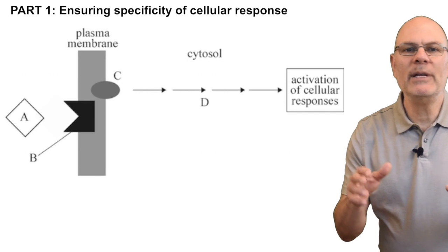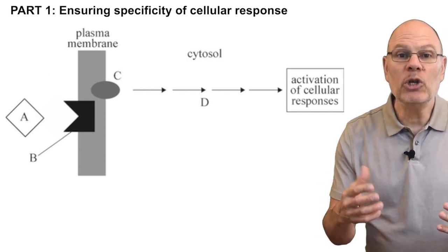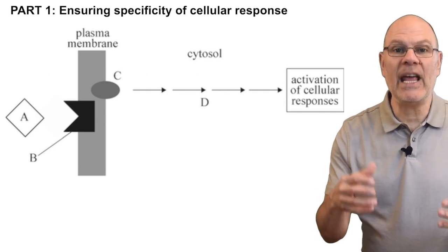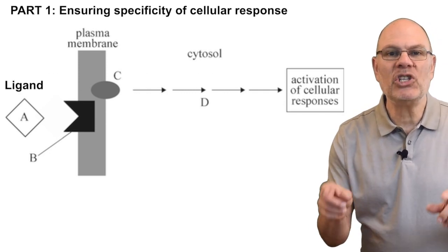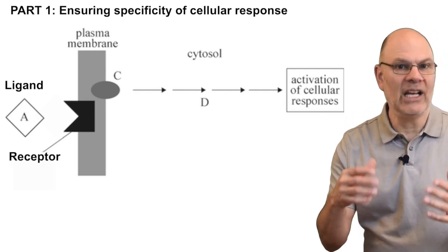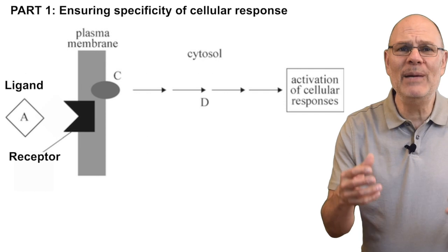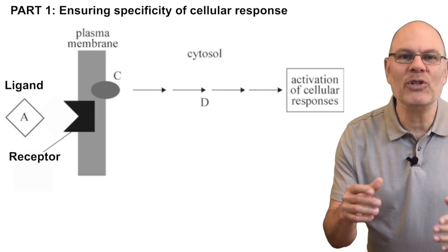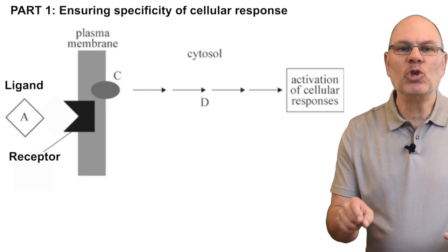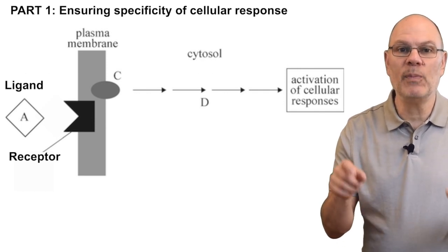Here's the answer. Complementarity is one of the most important ideas in biology. It's when molecules or larger structures fit together because their shapes match. Notice that the shape of the ligand is complementary to the shape of the receptor, like a lock and a key, or a hand and glove, or people and love. Other receptors have different shapes and won't bind with this receptor, ensuring that only cells with the target receptor respond to this signal.